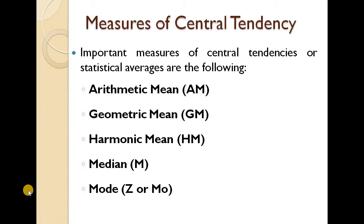There are five types of measures of central tendencies or statistical averages. The first one is Arithmetic Mean, denoted by AM. Geometric Mean, denoted by GM. Harmonic Mean, denoted by HM. Median, denoted by M. And Mode, denoted by Z or M0.